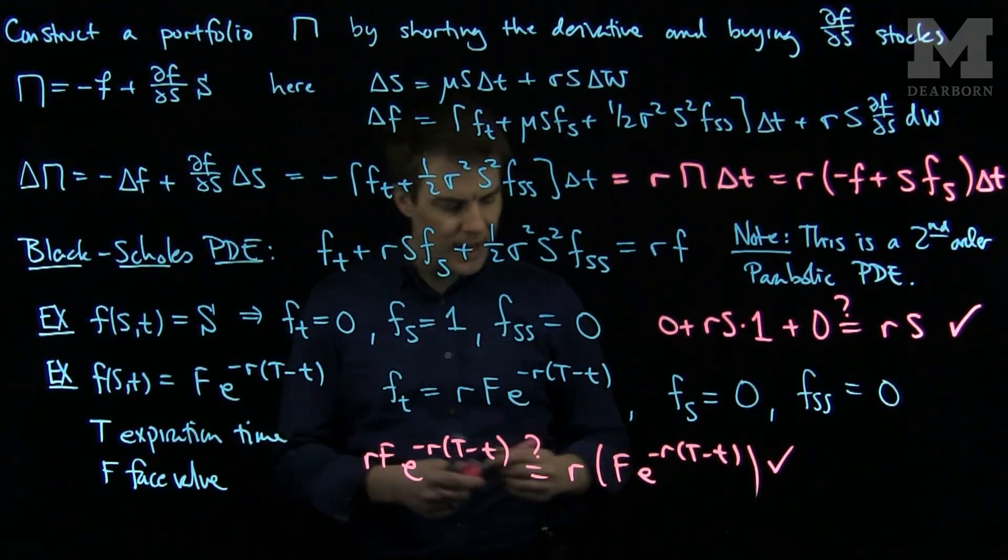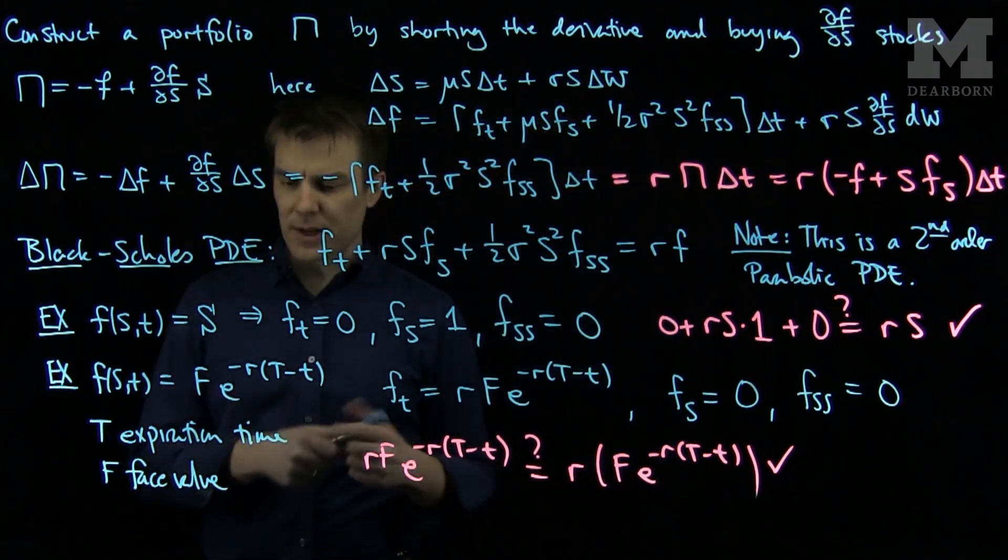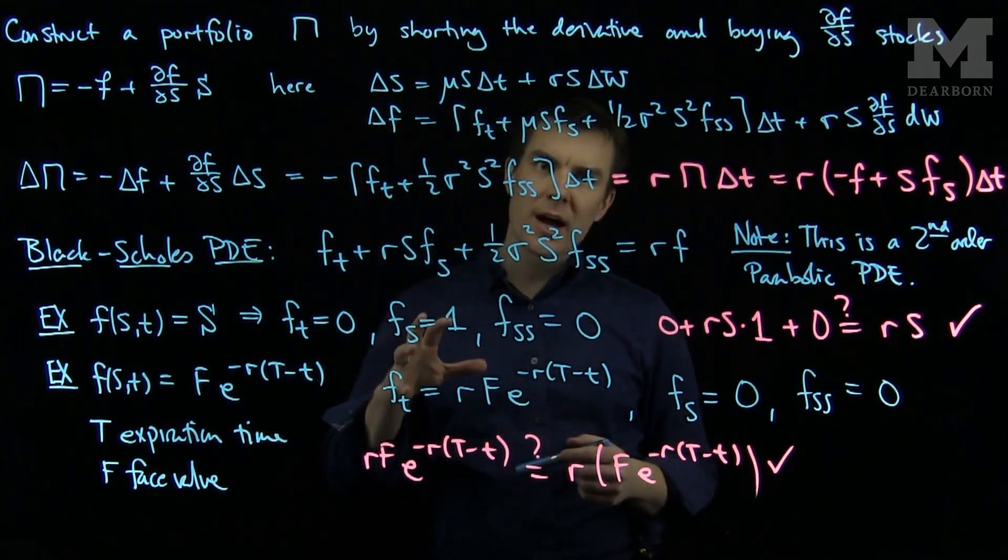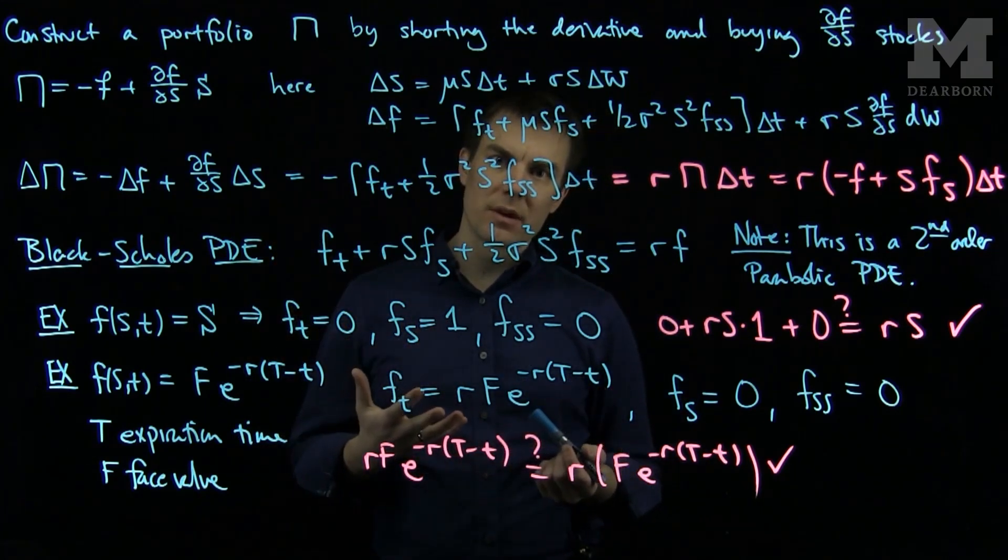So we've proven that a bond pricing is also a derivative. So between these two examples, we see that owning the stock or investing in a bond are both elementary types of derivatives.